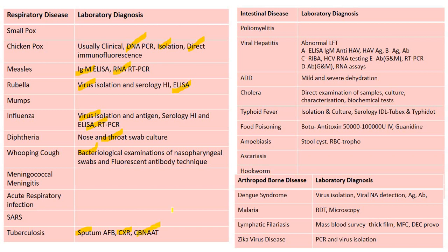Tuberculosis: sputum AFB, chest X-ray, CB-NAAT are needed according to the current RNTCP algorithm. Viral hepatitis: abnormal LFT will be present. For hepatitis A: ELISA IgM anti-HAV, HAV antigen. For hepatitis B: HBsAg, HBcAb antibody. For hepatitis C: RIBA, HCV RNA testing. For hepatitis E: IgG and IgM antibody, RT-PCR. For hepatitis D: IgG and IgM antibody, RNA assays.